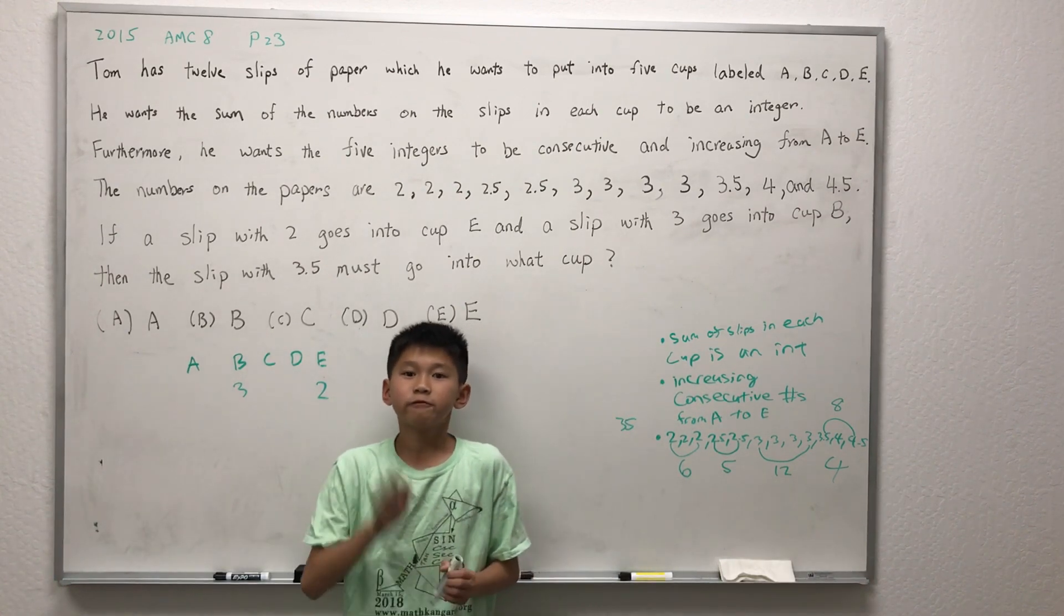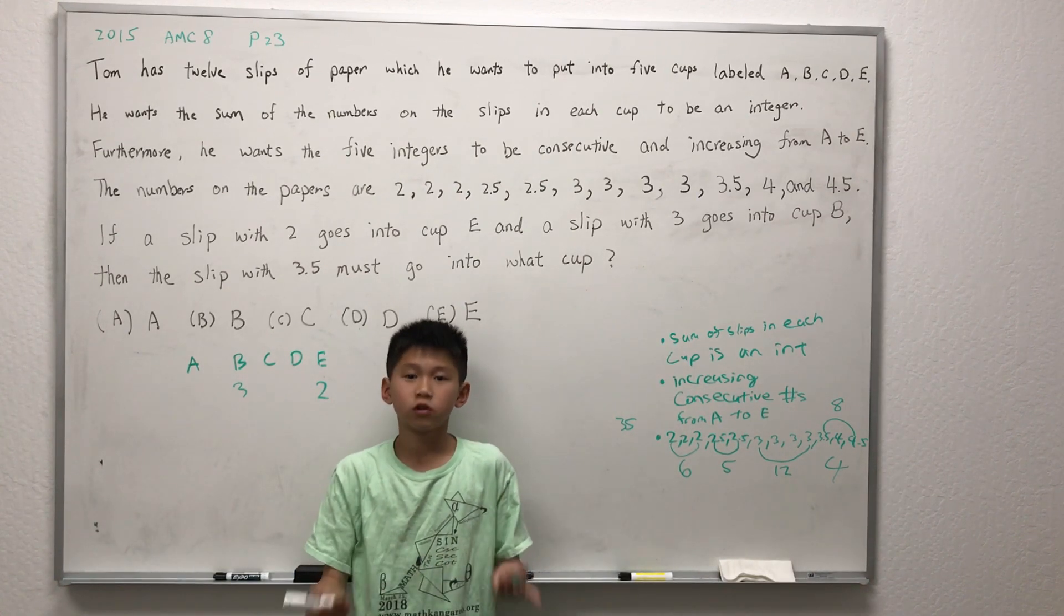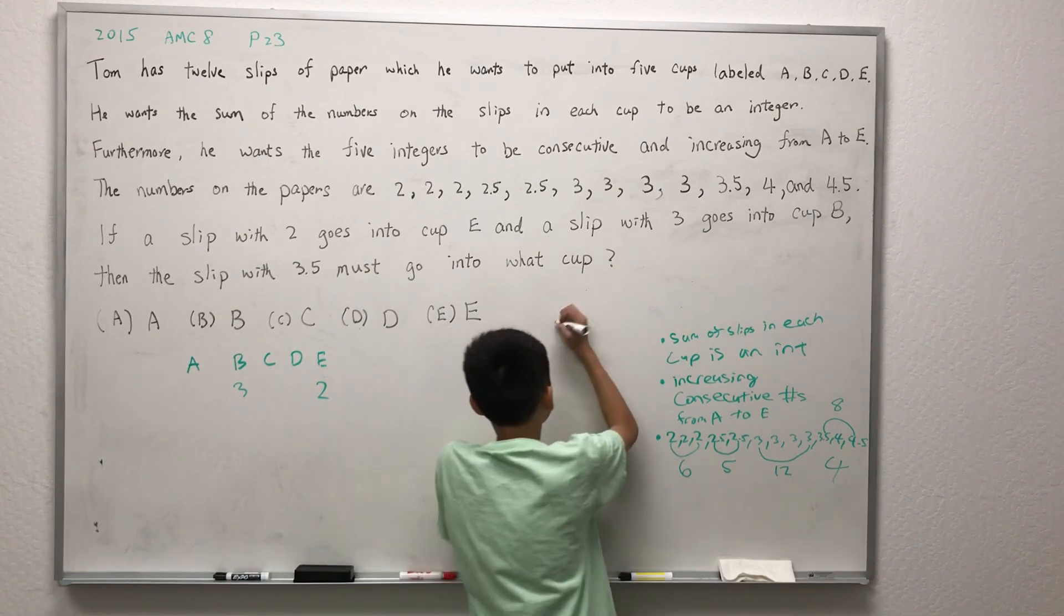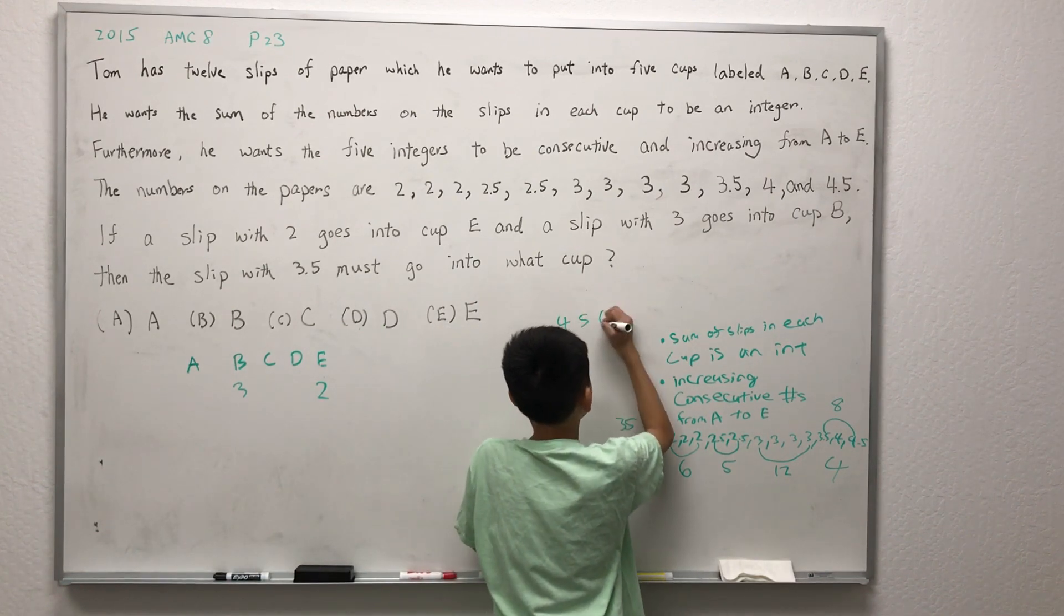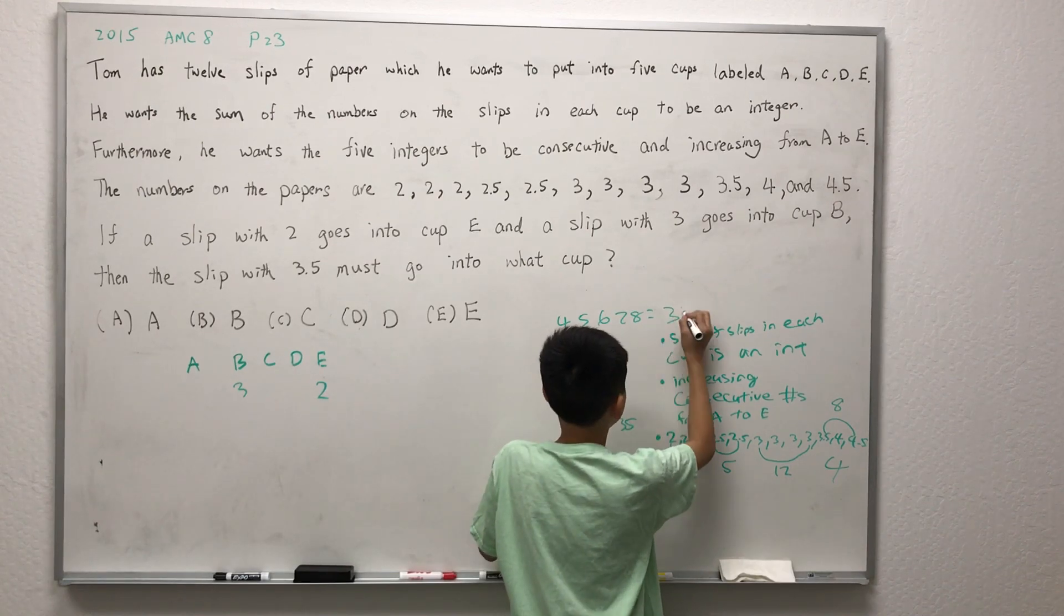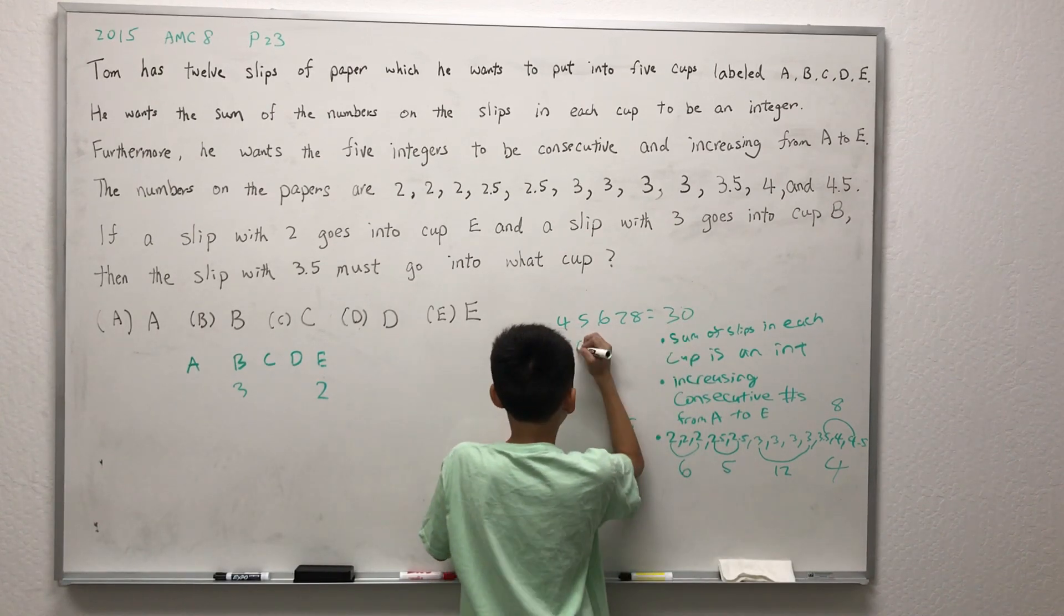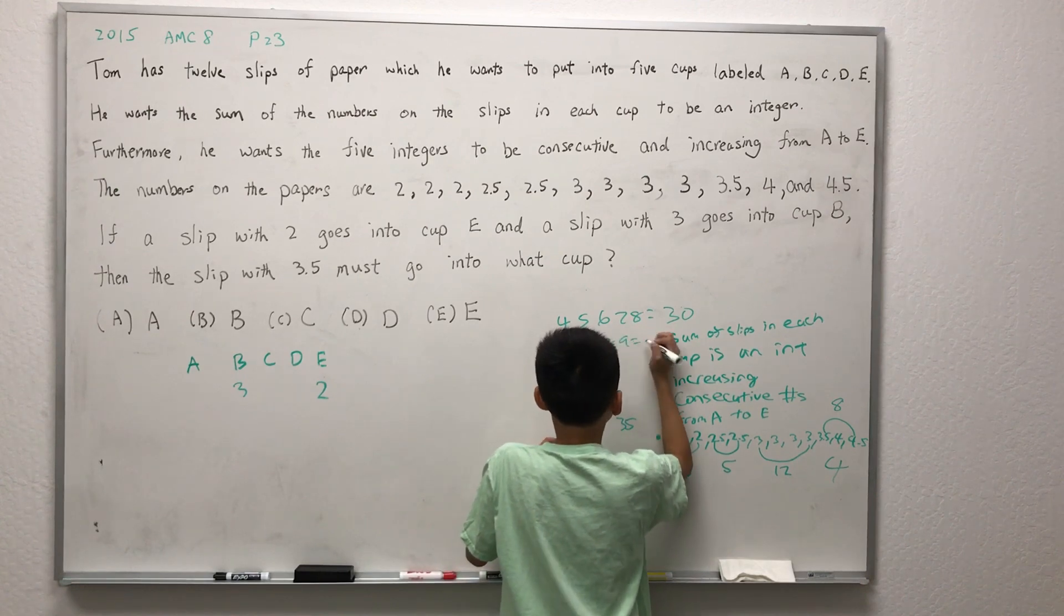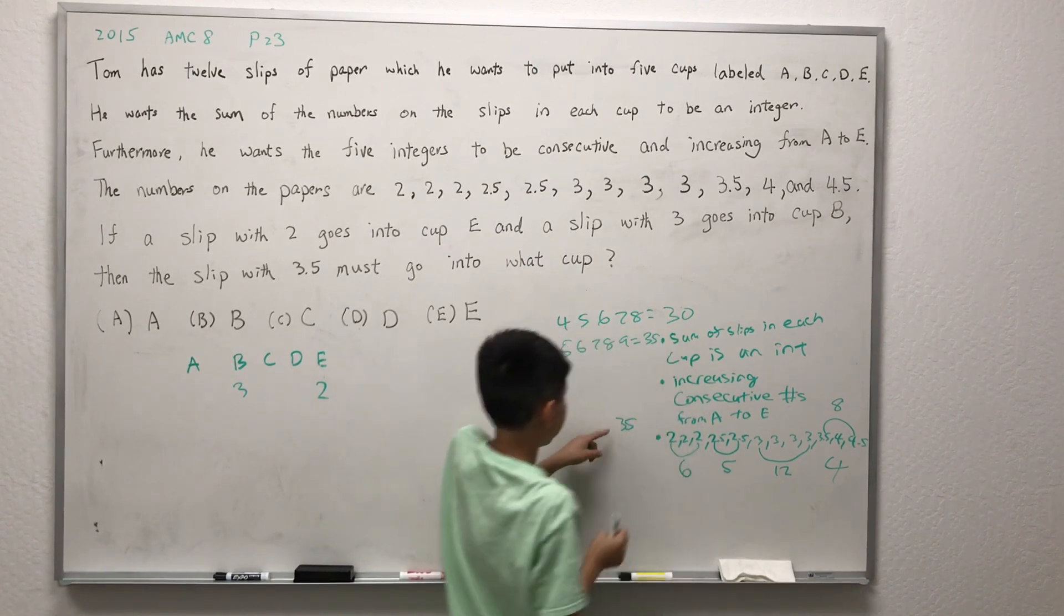We need to find five consecutive numbers that add up to 35. Let's try 4 plus 5 plus 6 plus 7 plus 8, which gets us to 30. Let's try 5, 6, 7, 8, 9. This gets us to 35, which is what we want.